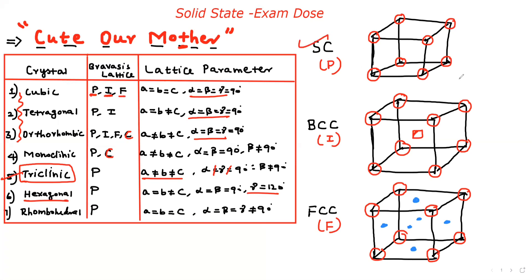Simple cubic has atoms only at the corners. BCC (body-centered cubic, called I) has atoms at the corners and at the body center. FCC (face-centered cubic) has atoms at the corners as well as at the center of all six faces — front, back, top, bottom, left, and right. Atoms occupying corners and all six face centers is FCC. Atoms at corners and body center only is BCC.